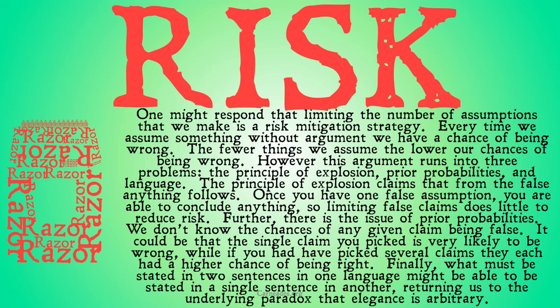One might respond that limiting the number of assumptions we make is a risk mitigation strategy. Every time we assume something without argument, we have a chance of being wrong — the fewer things we assume, the lower the chances of being wrong. However, this argument runs into a number of problems: the principle of explosion, prior probabilities, and language. The principle of explosion claims that from the false, anything follows. It means that if you ever assume something that's false, everything falls apart and you can prove absolutely anything you want. Once you have one false assumption, you're able to conclude anything. So limiting false claims does little to reduce the overall scale of the risk.